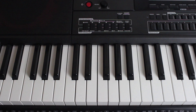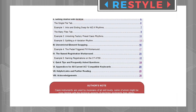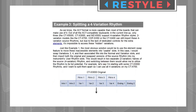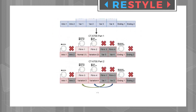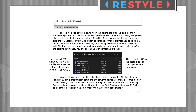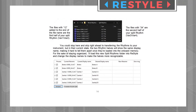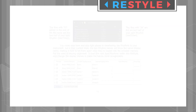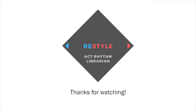That wraps up our general overview of ReStyle's main features, but like I said before, there's plenty more to learn about in the full user's guide, so I highly recommend you check that out. If you want to download ReStyle and start unlocking these extra features for your Casio keyboard, you can find a link to the hub thread over on the forums in the description down below. This has been Chandler Holloway, project lead for ReStyle — thanks for watching.